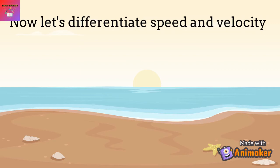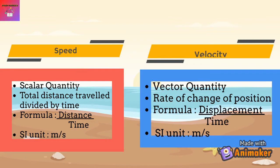Now let's move on to speed and velocity. Speed is a scalar quantity while velocity is a vector quantity. Speed is derived as the total distance travelled divided by time, so the formula is distance divided by time. Velocity, on the other hand, means the rate of change of position, and the formula is displacement divided by time. Both have the same SI unit: metre per second.